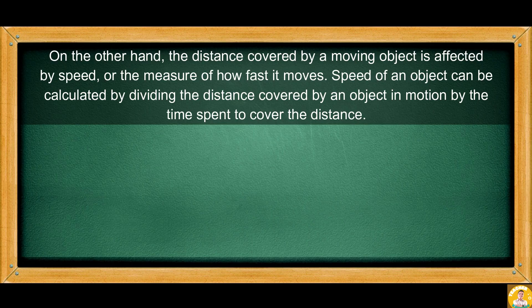On the other hand, the distance covered by a moving object is affected by speed or the measure of how fast it moves. Speed of an object can be calculated by dividing the distance covered by an object in motion by the time spent to cover the distance.